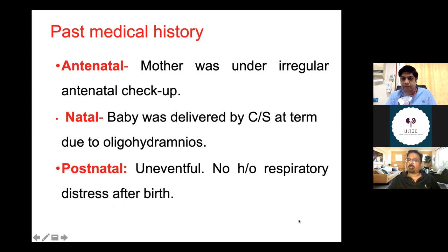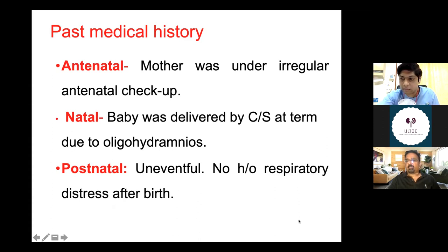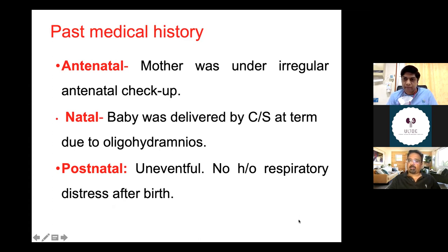So, in a patient with recurrent urinary tract infection, what is the first common thing which comes to mind? Vesicoureteric reflux — correct. You generally think of vesicoureteric reflux as the first cause if somebody has recurrent UTI. That is something you have to keep in mind. Now, you mentioned antenatally the mother was under irregular follow-up. Did you find out whether any antenatal scan reports were available? She did not have any records but says scans were done — she is not sure what was communicated to her.